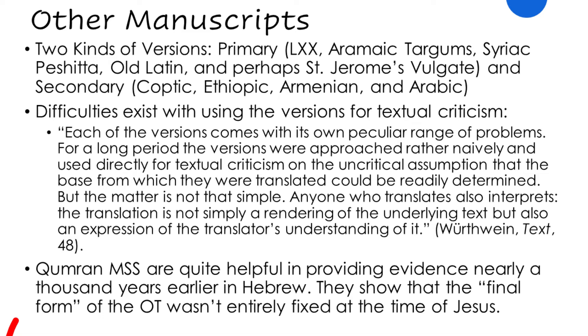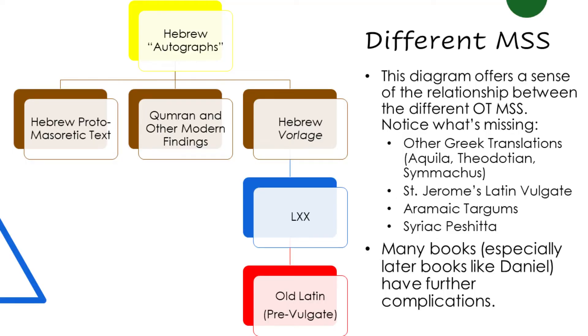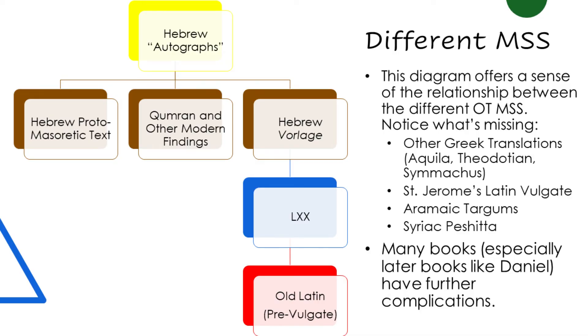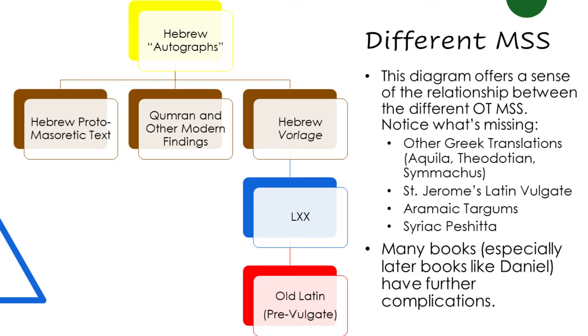Qumran — the Dead Sea Scrolls — gave us other Hebrew manuscripts that are earlier and often confirm but sometimes challenge the Masoretic text. The Hebrew autographs were transmitted in two main families, with Qumran standing in between. Scholars identify the Hebrew Masoretic tradition and what they call the Hebrew Vorlage — a German word meaning 'early edition' — which is what the translators of the Septuagint used. Already a couple hundred years before Jesus, there were two different Hebrew text families that substantially differed from one another, especially in the book of Jeremiah.